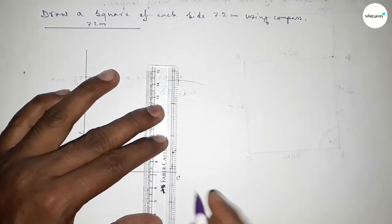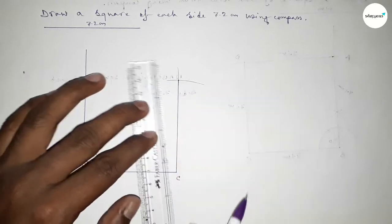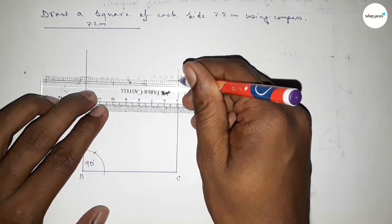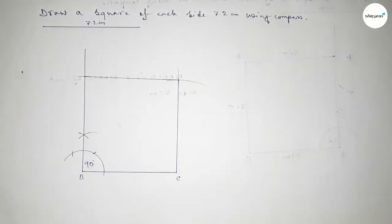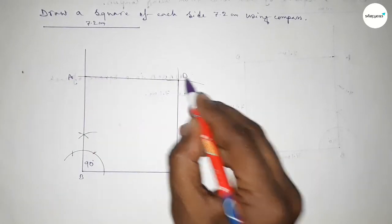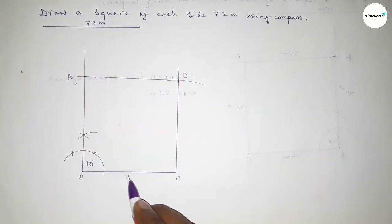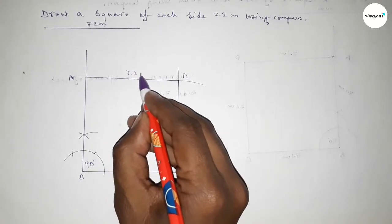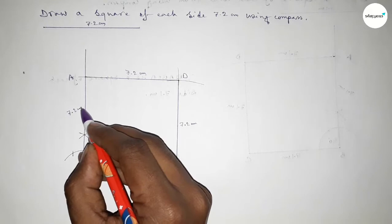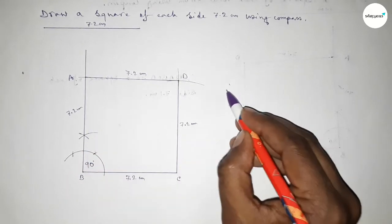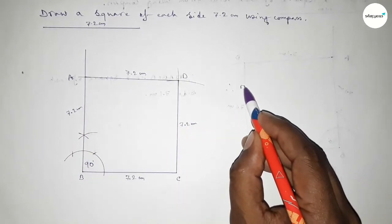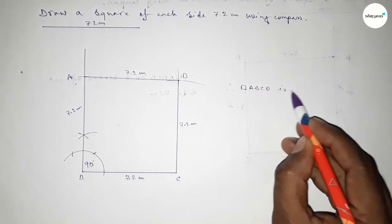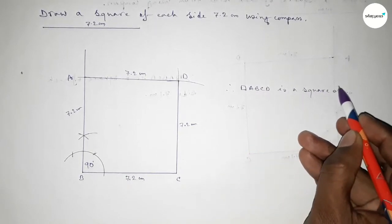Now joining this line, then joining this line to complete the square. Taking here points A and D — this side 7.2 centimeters, this side 7.2 centimeters, this side 7.2 centimeters, this side 7.2 centimeters, and this side also 7.2 centimeters. Therefore, ABCD is a square of each side 7.2 centimeters.